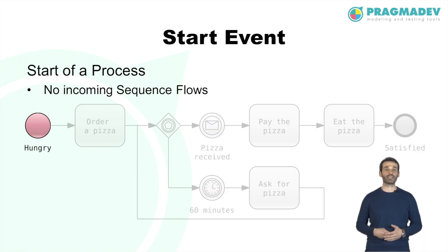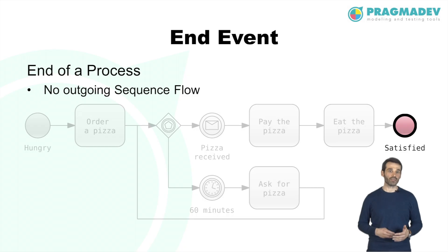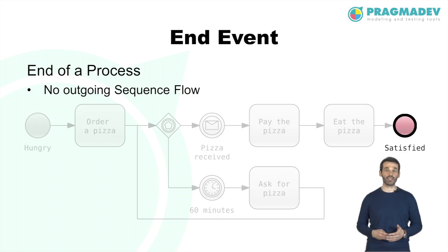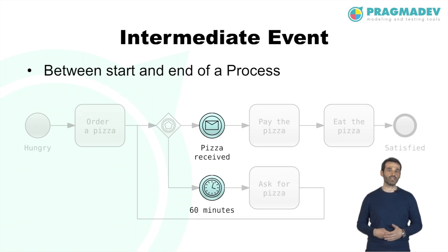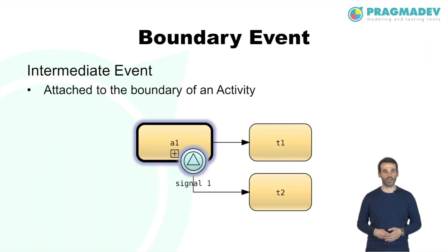The start event indicates where a process will start and cannot have any incoming sequence flows. The end event indicates where a process will end and will not have any outgoing sequence flows. Intermediate events indicate where something happens between the start and the end of a process; they affect the flow but will not start or terminate the process. An intermediate event can be attached to the boundary of an activity, known as a boundary event.